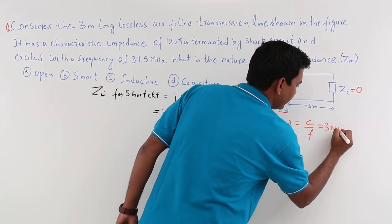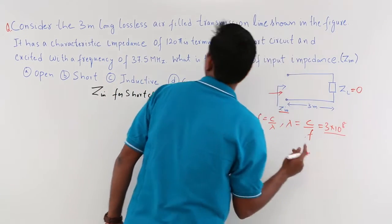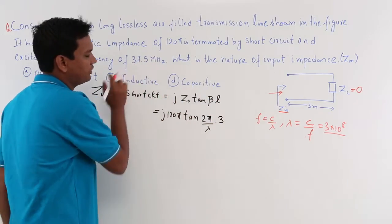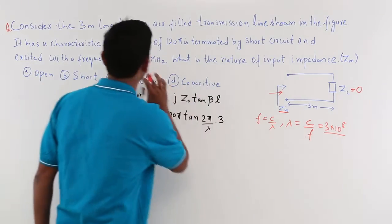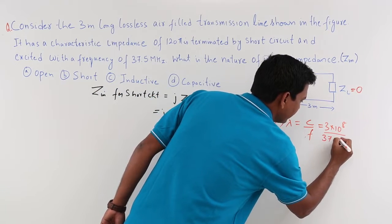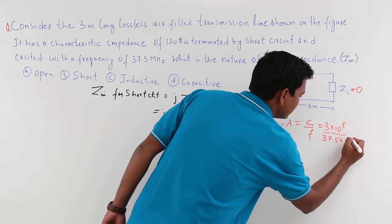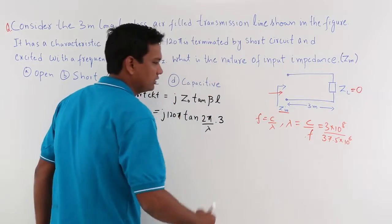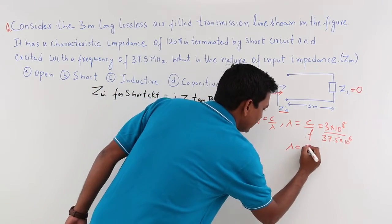f is given as 37.5, so it comes out to be 37.5×10⁶ mega. If I solve this I will get lambda as 8 meter.